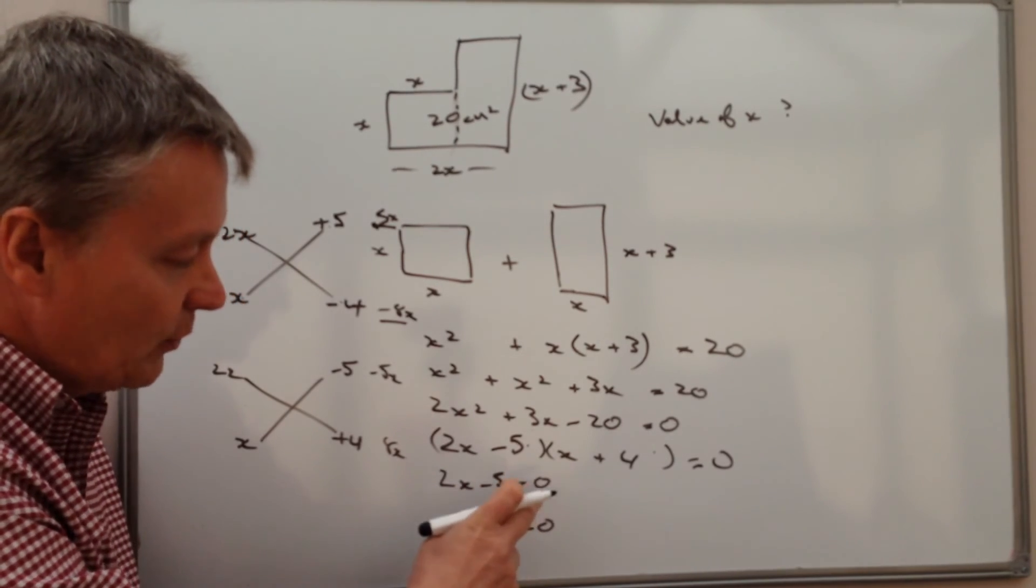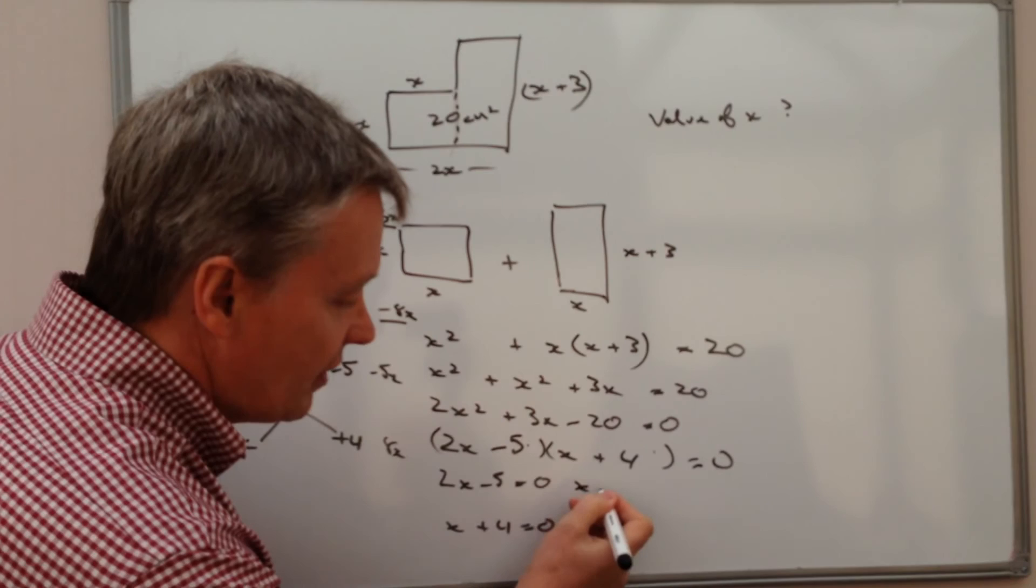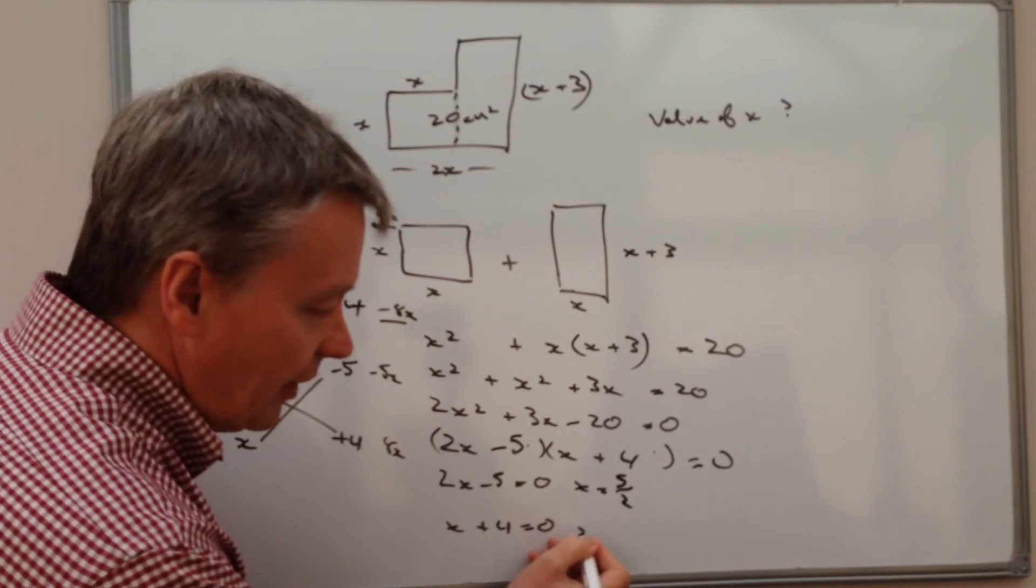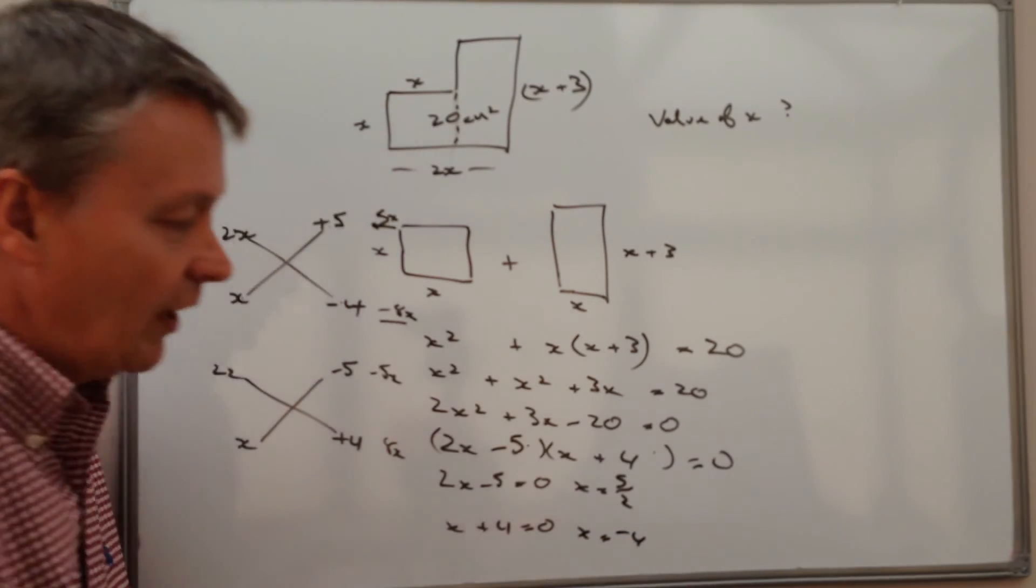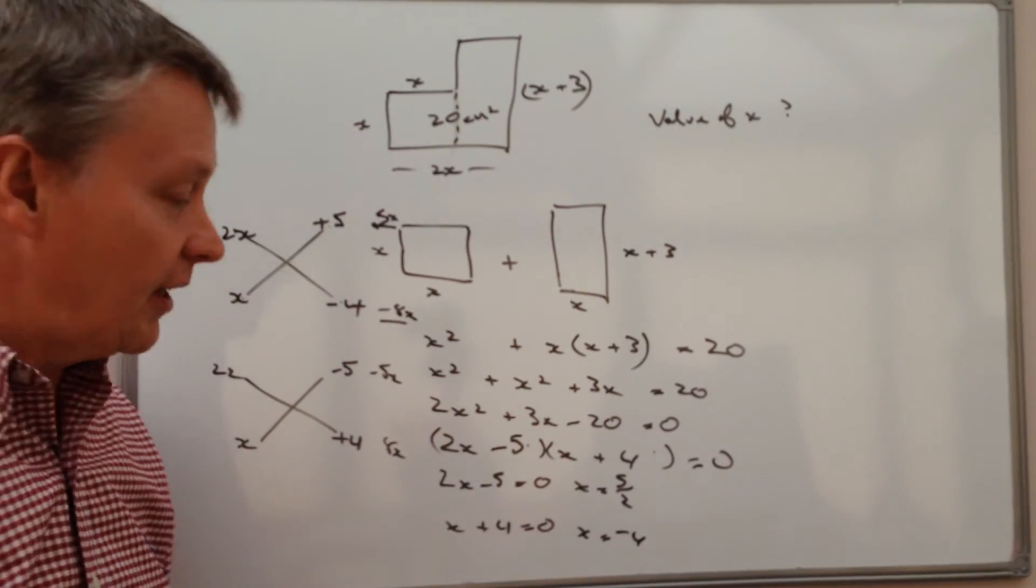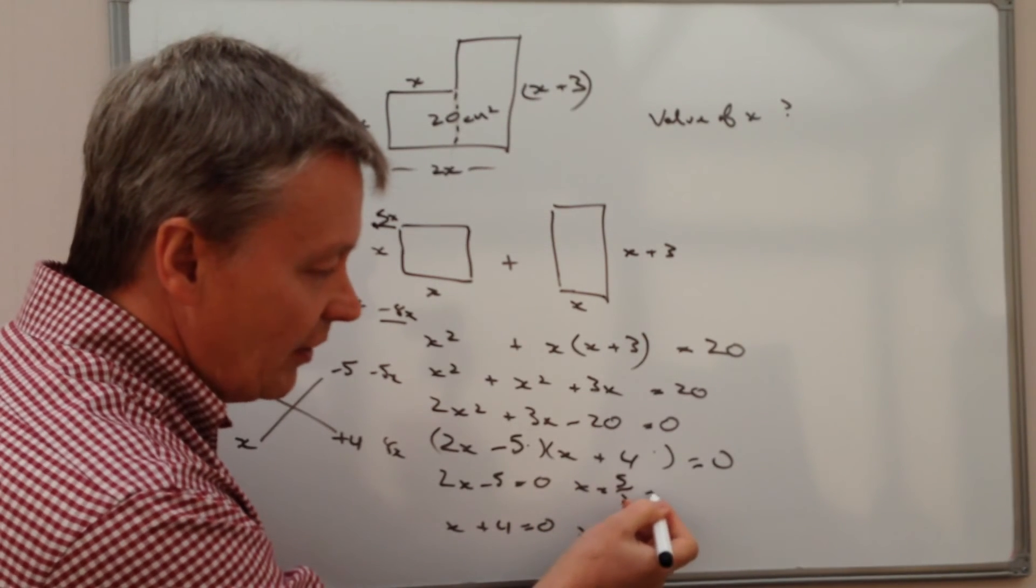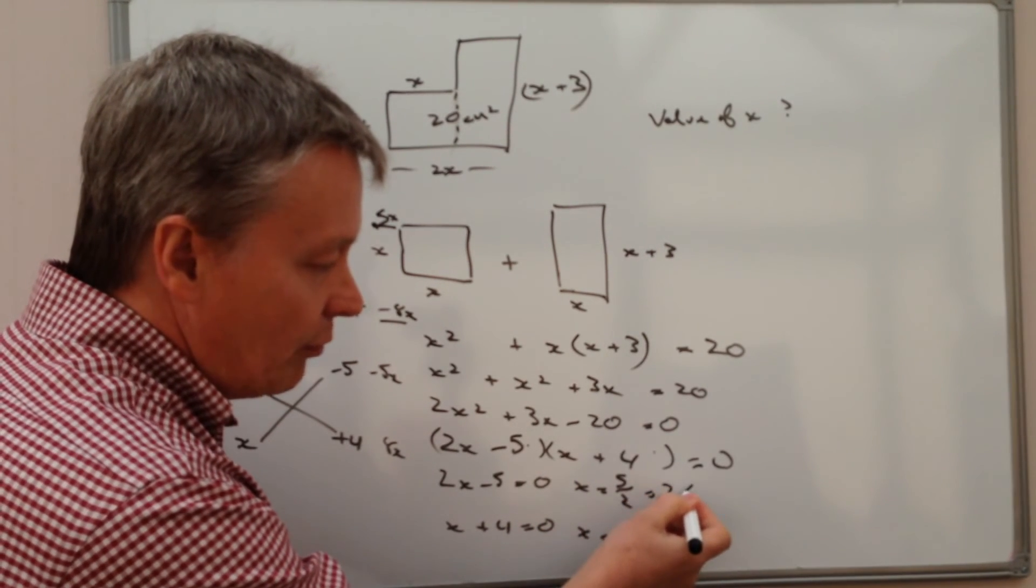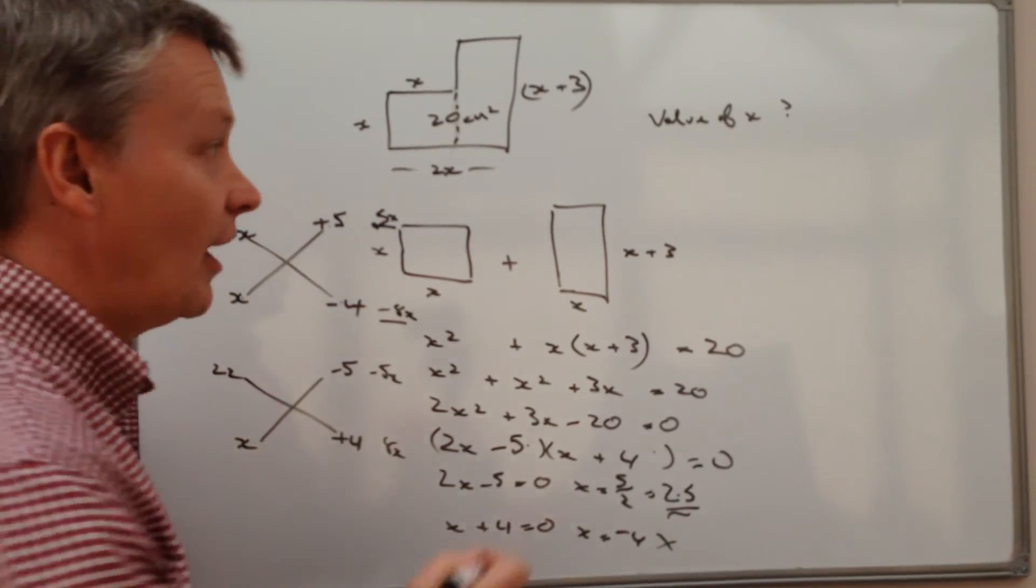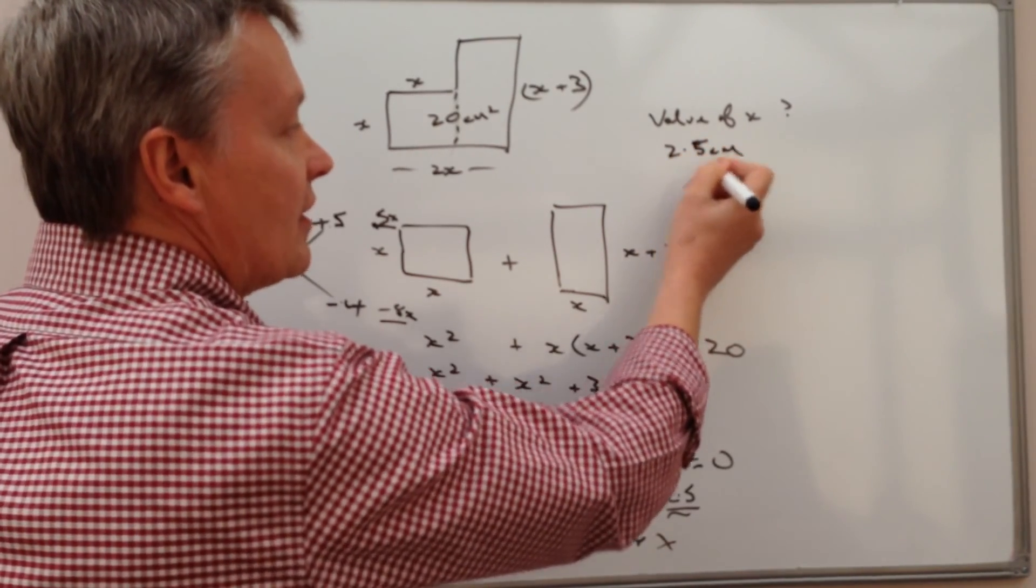So 2x minus 5 equals 0. If I manipulate that I'm going to get x equals 5 over 2. If I manipulate this one I'm going to get x equals minus 4. Well it's not going to be minus 4 because that wouldn't work in this particular question. So that's not going to be right. 5 over 2 means that the value of x is 2.5. Which I think will work very well in this particular question. So the value of x is 2.5 centimeters.